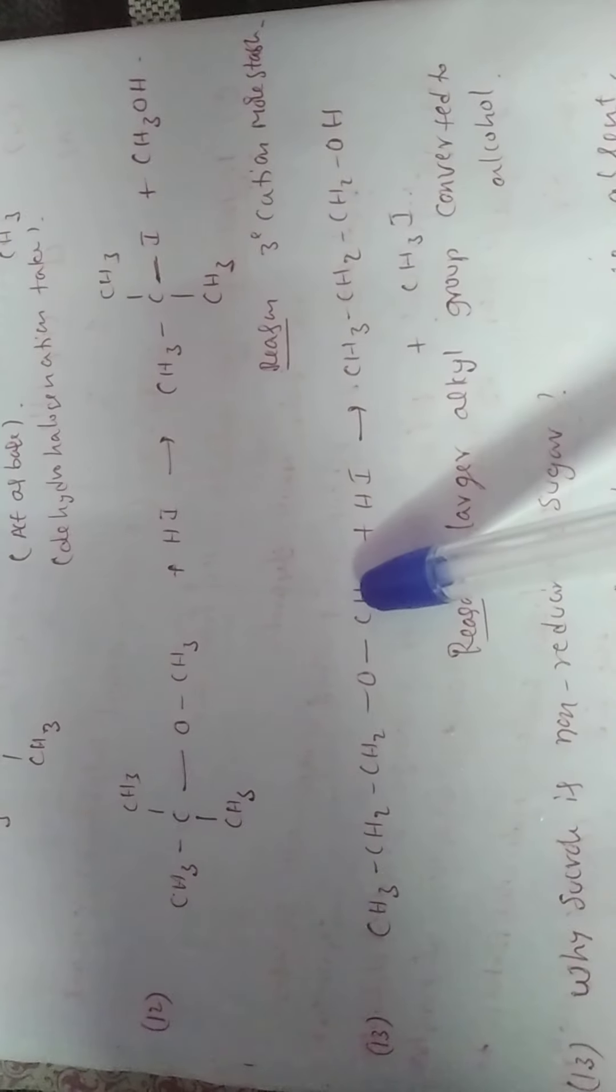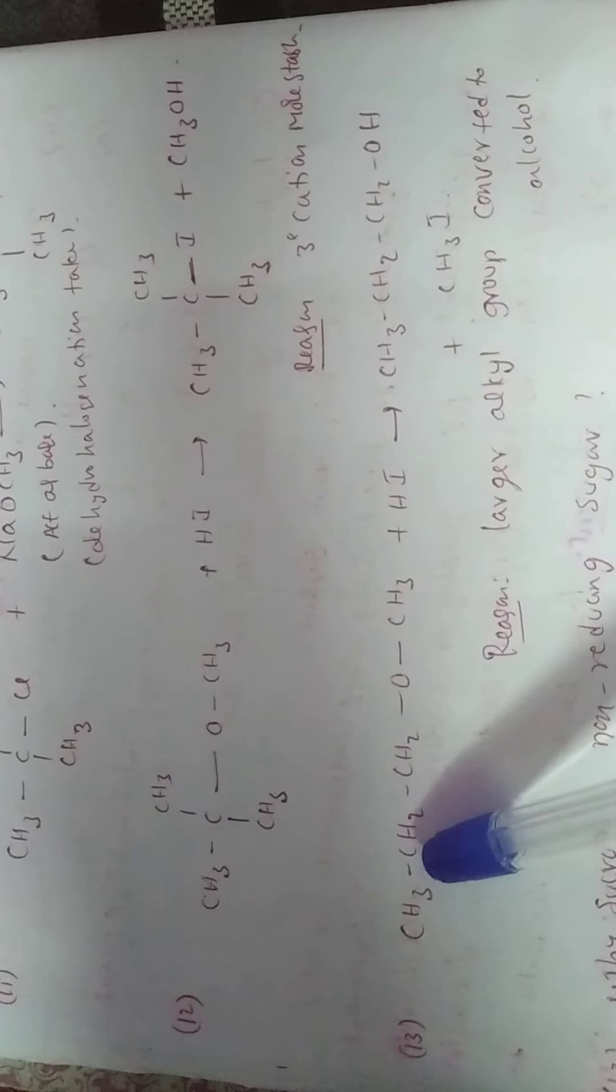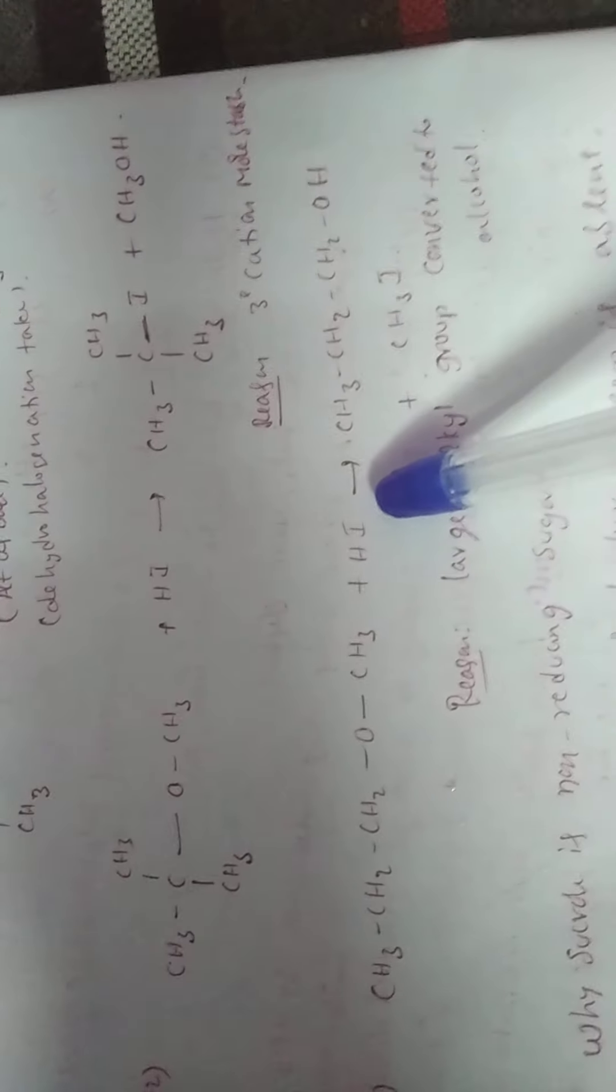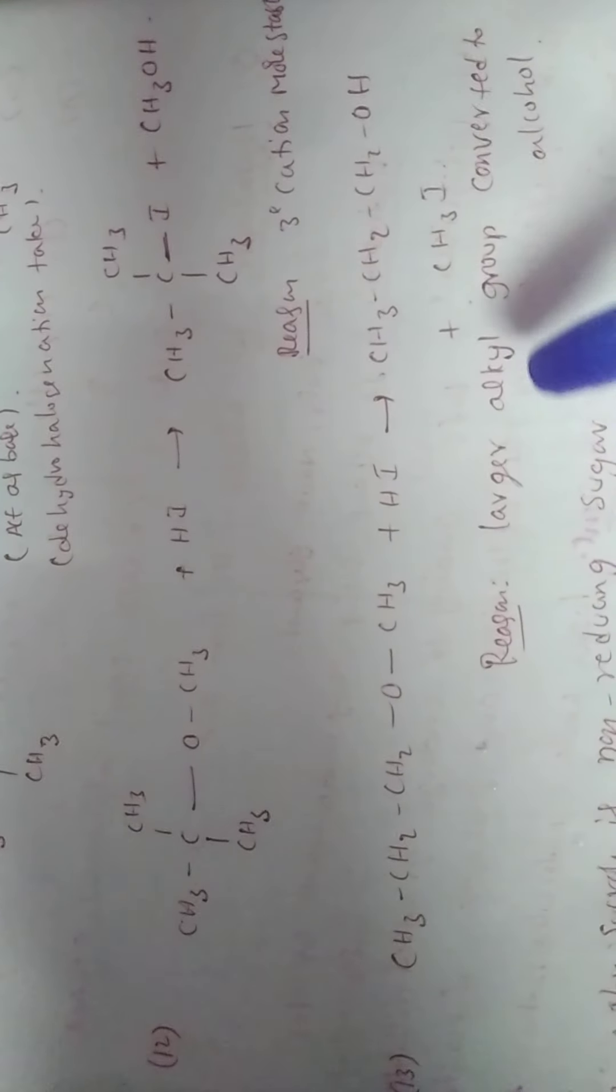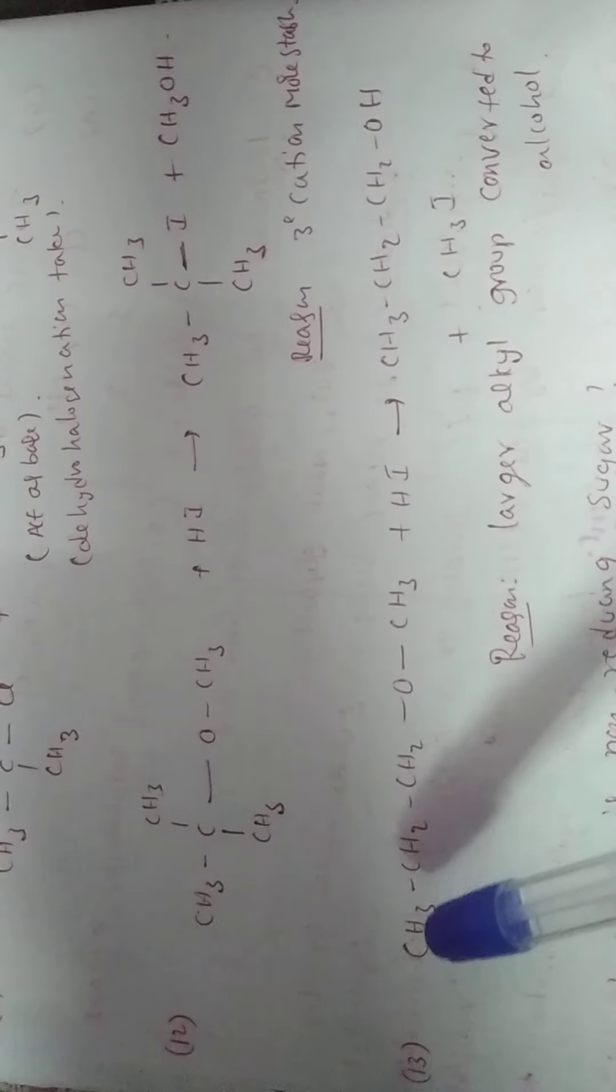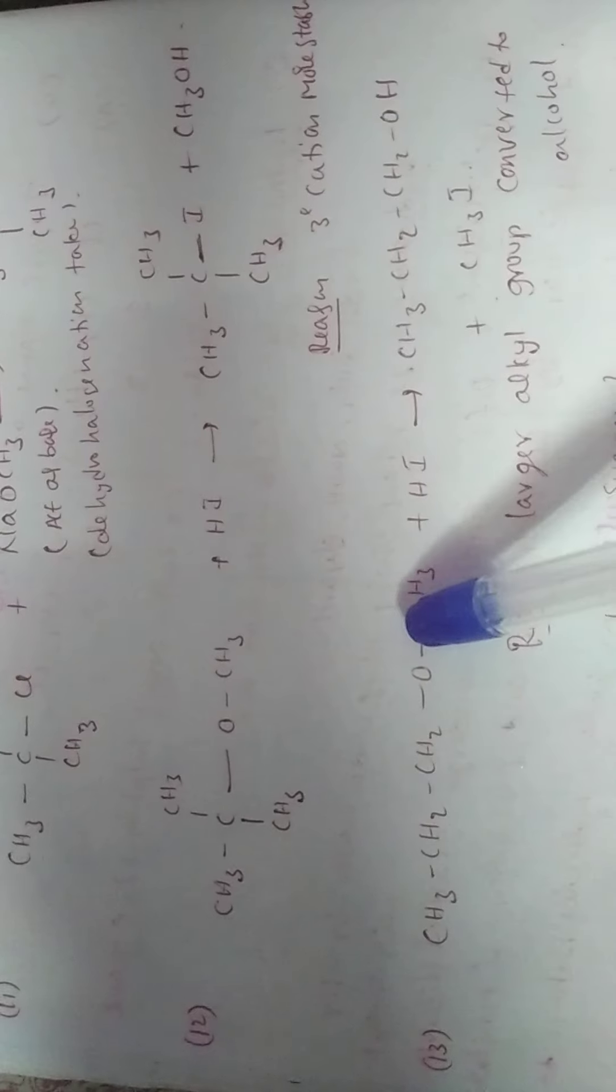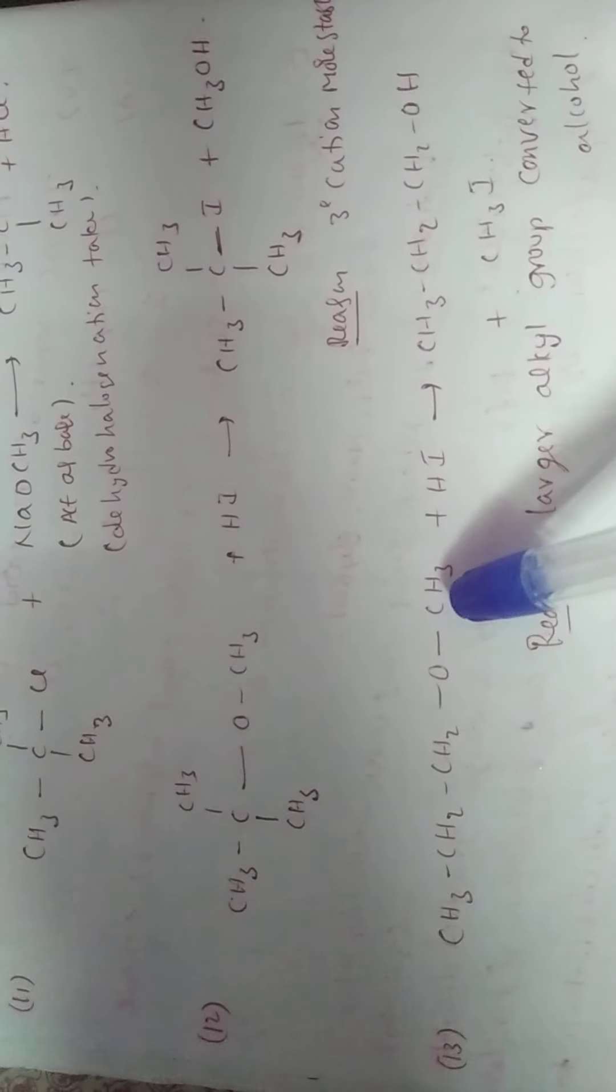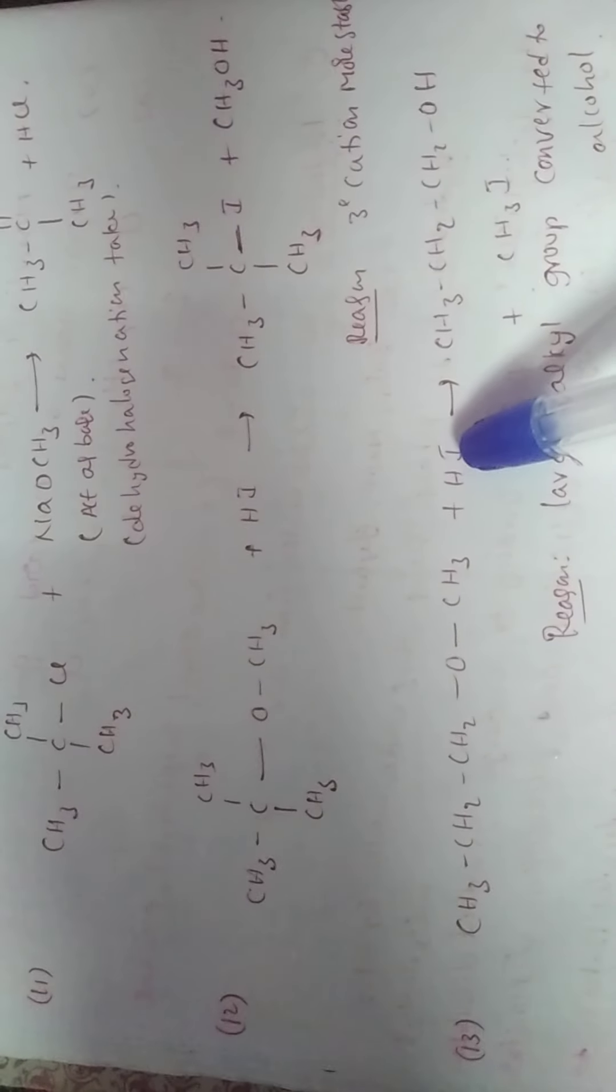This asymmetric ether. Asymmetric ether means alkyl groups are different, methyl and propyl. When react with HI, larger alkyl group converted to alcohol. This one is larger alkyl group. Here this bond breakdown, O minus combined with H plus. CH3 plus combined with I minus.